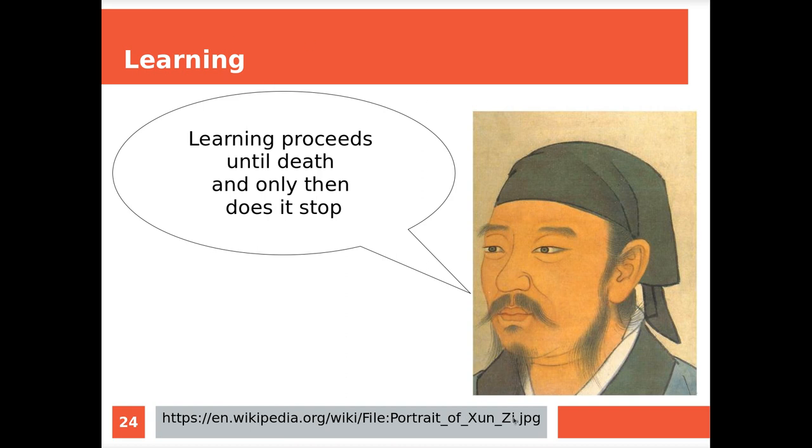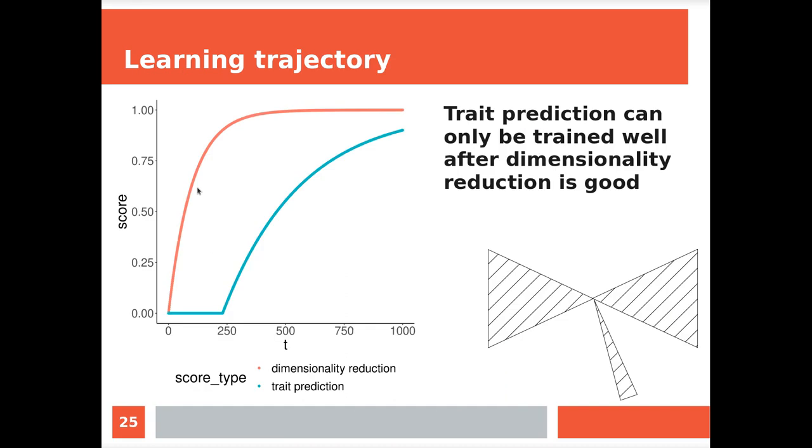But one other aspect is about learning. So here we have Sun Tzu. He was the third most important Confucianist philosopher that lived around 300 before Christ. And he says, learning proceeds until death, and only then does it stop. So of course that's very wise. But for a neural network, after a while we want it to be done learning and stop. We can't let a neural network learn forever, because within our lifespans we would like to get our results. So we need to see how well it is learning, and how well it is doing, and when it has learned its stuff.